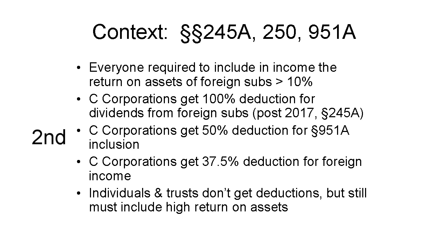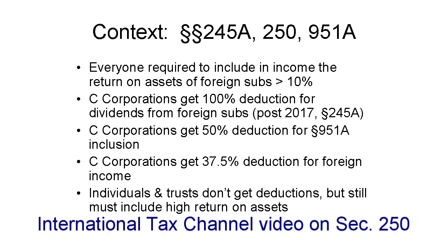Second, C-corporations get a deduction under Section 250 for half the inclusion under 951A. Individuals don't get this deduction. Finally, C-corporations also get a deduction under Section 250 for part of their profits on sales or services to foreign customers. See my video on Section 250.